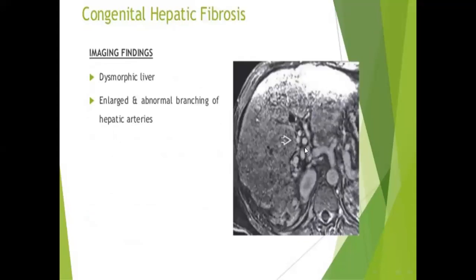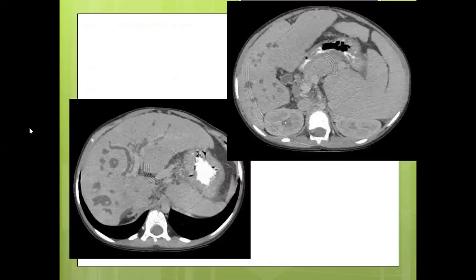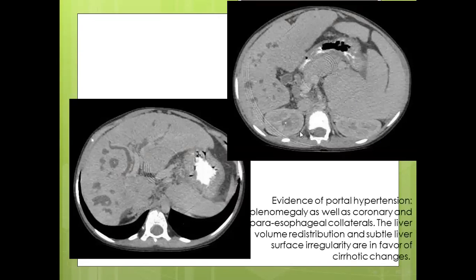In Caroli syndrome, imaging may show a dysmorphic liver, large and abnormal branching of the hepatic arteries, dilated splenic and portal veins, left lobe hypertrophy, redistributed liver parenchyma, and scarred atrophic kidneys — along with dilated intrahepatic biliary tree, central dot sign, splenomegaly, and collaterals indicating portal hypertension and cirrhotic changes.